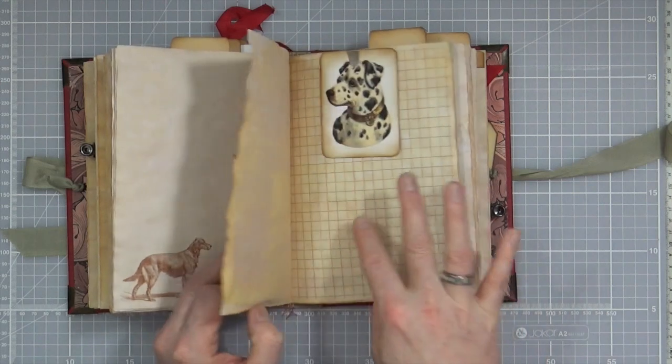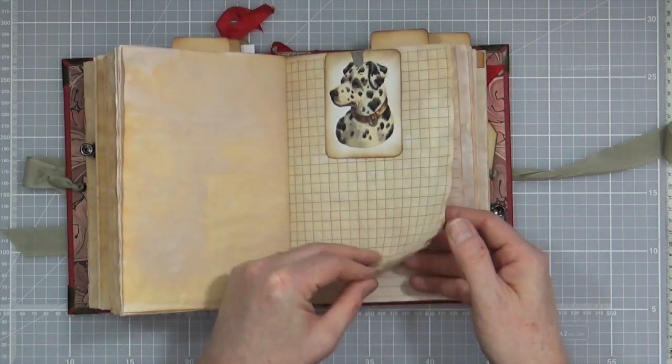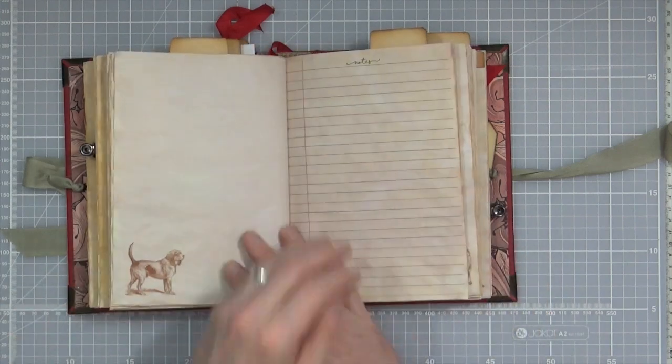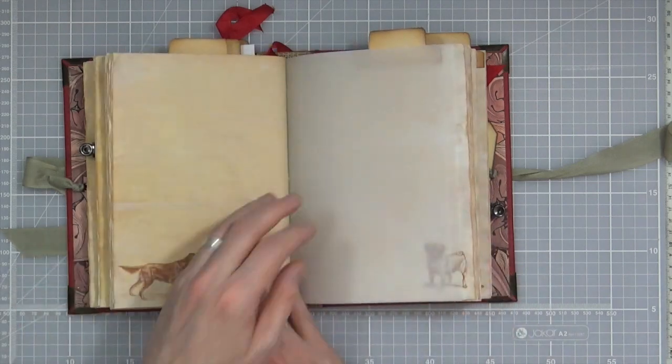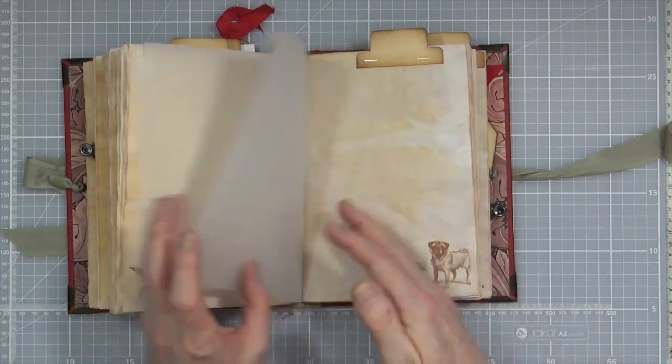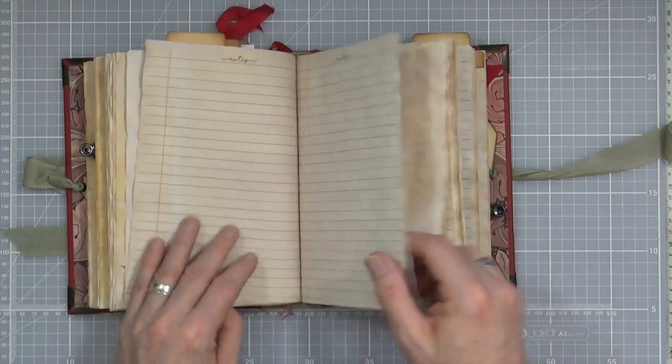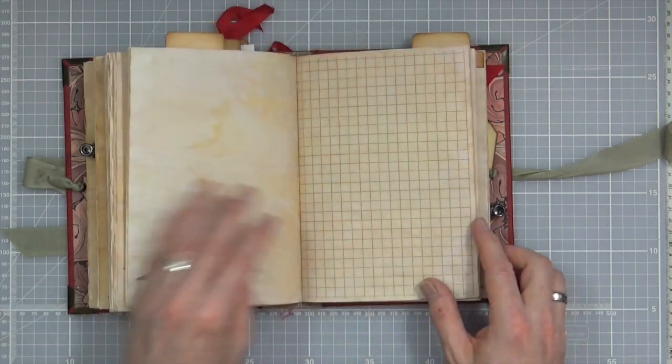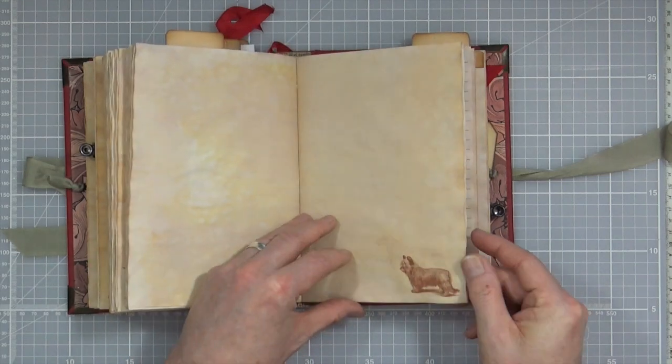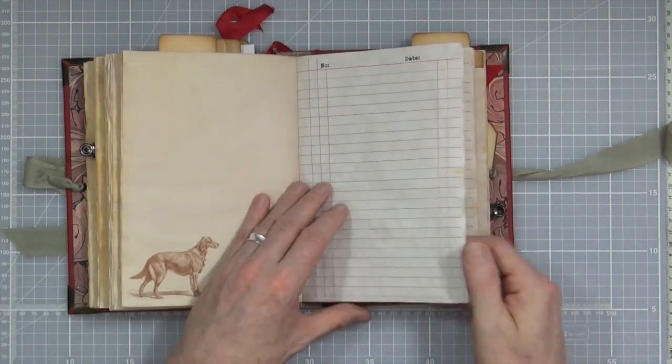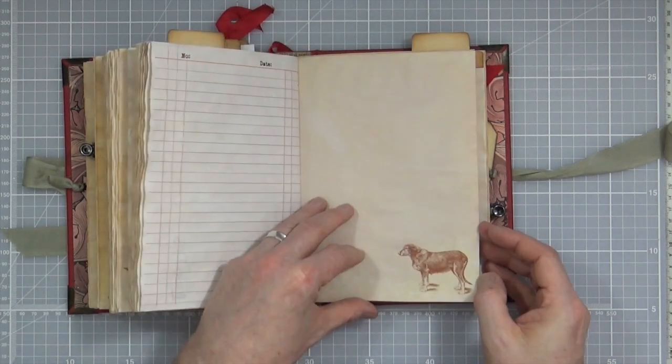Tag. More little ATC type cards with different doggies. As you can see, lots and lots of space for journaling, writing, taking notes, writing down memories, using as a diary perhaps even if you wanted to. Or just writing down thoughts and jottings. Even maybe even dog related. Doggy diary.